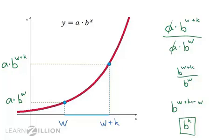Note that b to the k does not depend on w. It does not depend on the location of the interval whose length is k. This proves the function will grow by equal factors over equal intervals.